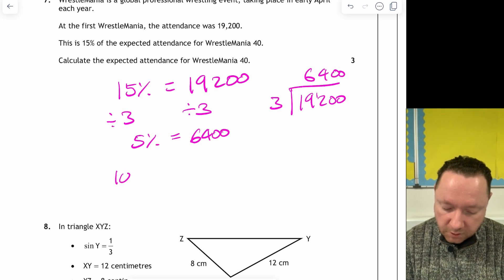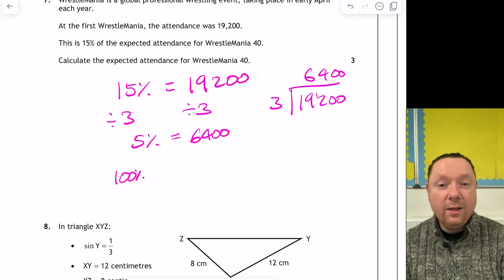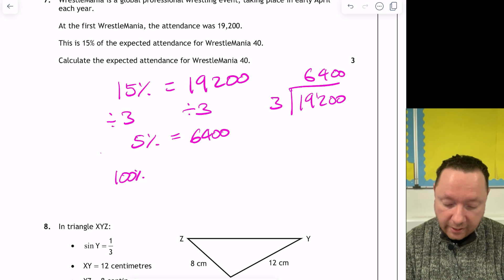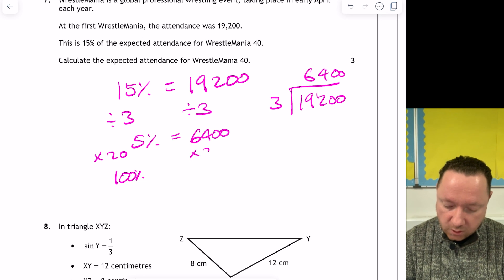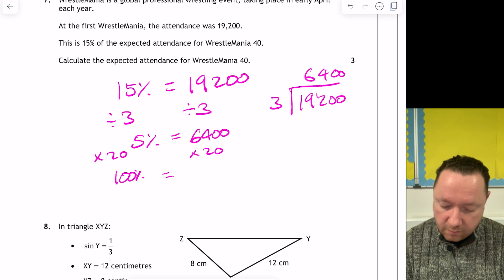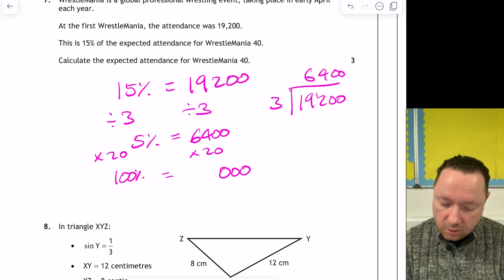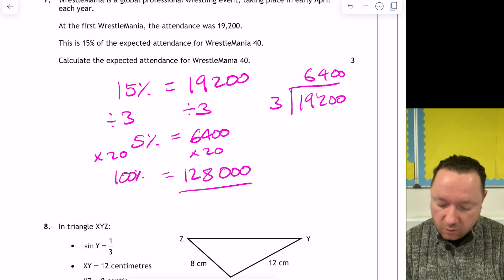So now I want to get up to 100%. I can go straight away. I don't need to go down to 1, because 5 goes into 100 20 times. So I'm times it by 20. Times it by 20, or just times by 0. So I get 000. That's times it by 10. 2 times 4 is 8. 2 times 6 is 12. 128,000. And we're done there.